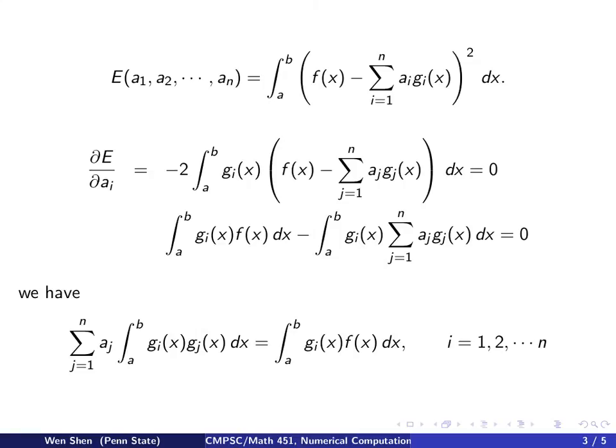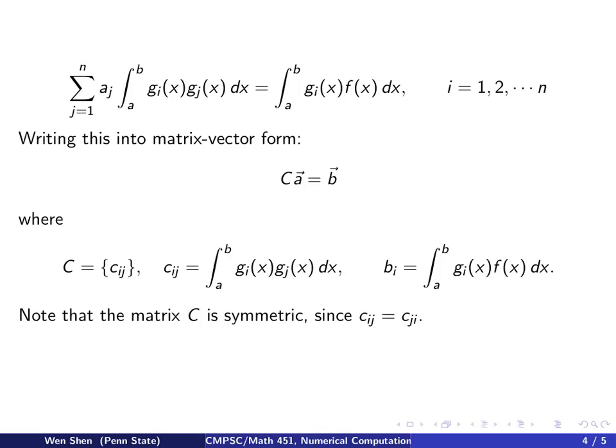And this holds for i from 1, 2, all the way to n. So I basically have n equations here, and I have n unknowns on those coefficients a's. So I have the last equation rewritten here, and we want to write these equations into a matrix vector form.